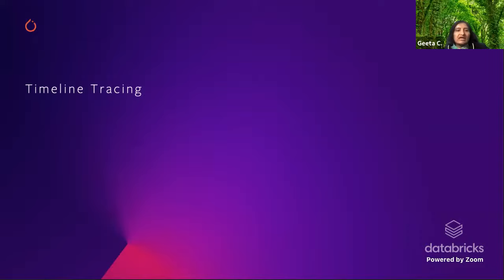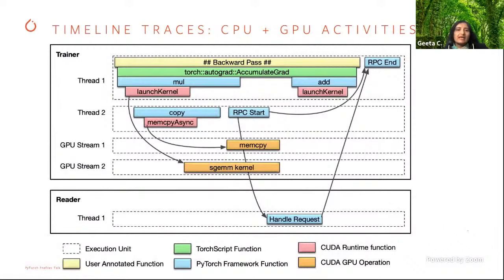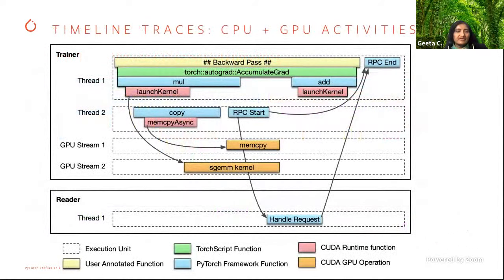Now let's dive into the timeline tracing. This is what the timeline trace typically looks like for tracing CPU and GPU activities. You will see different threads on the CPU side, and for the GPU, all the streams. At the bottom, you will see all the details and arrows showing the relationships — how they are linked together.